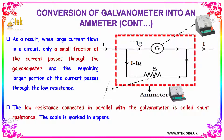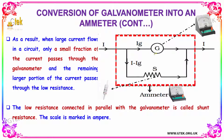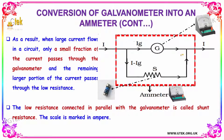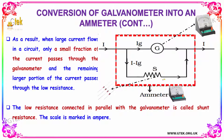As a result, when a large current flows in a circuit, only a small fraction of the current passes through the galvanometer and the remaining larger portion of the current passes through the low resistance. The low resistance connected in parallel with the galvanometer is called shunt resistance, and the scale is marked in amperes.